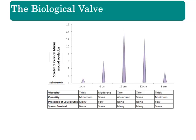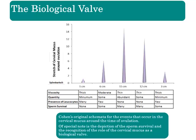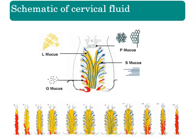Researchers have known about the different types of cervical fluid throughout the menstrual cycle since before the first birth control pill was available. In 1952, Dr. Cohen described cervical mucus around ovulation and published a schema of its physical characteristics, including viscosity, quantity, spinnbarkeit — the ability to spin into a thread — and the presence of leukocytes. Most importantly, he found that mucus type correlates to sperm survival, so he called it a biological valve.